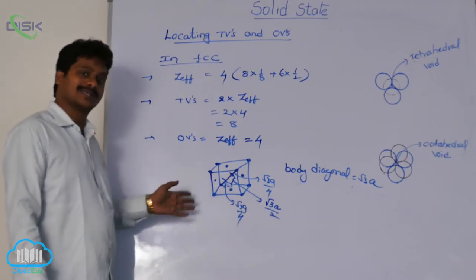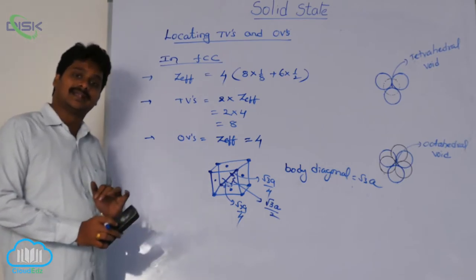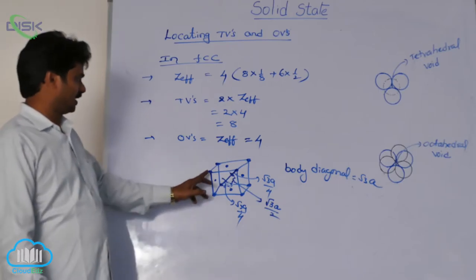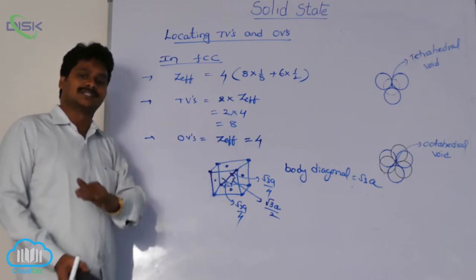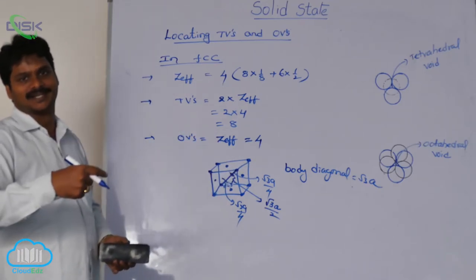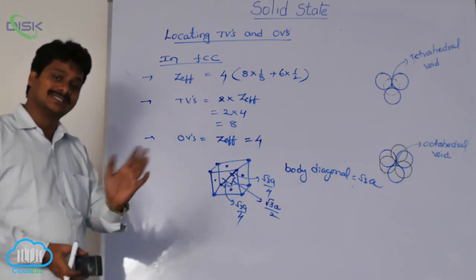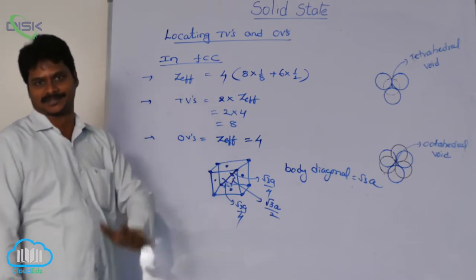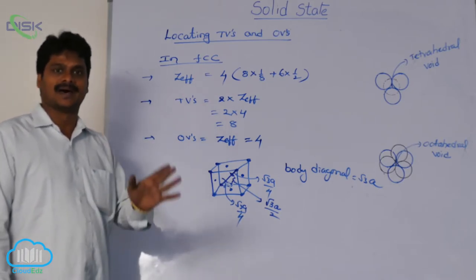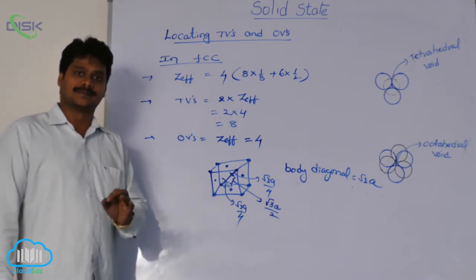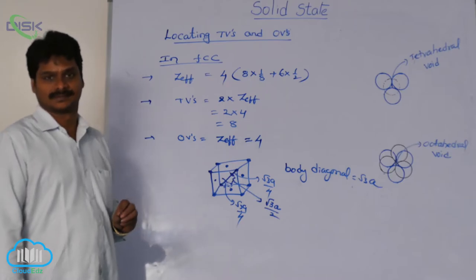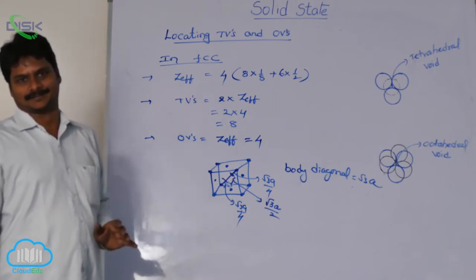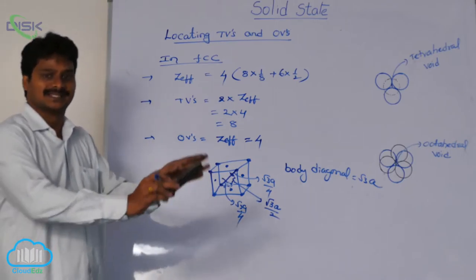This is about tetrahedral voids in the FCC system. All the tetrahedral voids are located inside the unit cell — along the body diagonal at one-fourth distance from the corner means the void is always inside the system. That is why all the atoms present in tetrahedral voids are complete atoms, not parts — no 1/2, no 1/8, no 1/4. It is a complete atom.